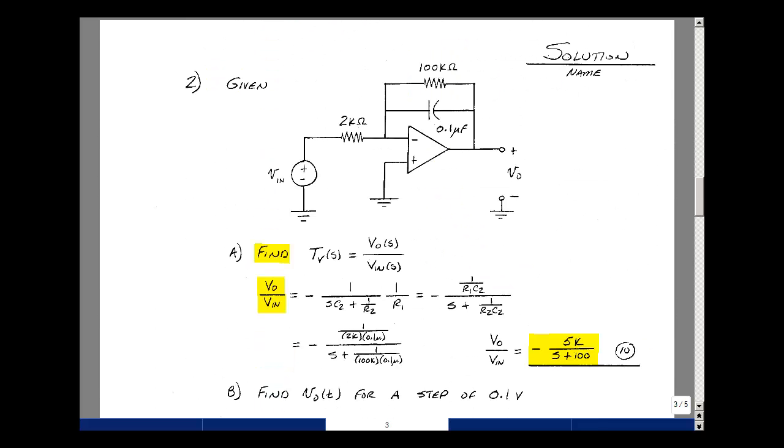In problem number two, we're asked to find the voltage transfer function in the S domain. If you recall for an op-amp circuit in an inverting amplifier configuration, the gain is equal to minus Z2 divided by Z1. Since they have two elements in parallel, let me add up their admittances and then take the reciprocal. I'll call this R1, R2, and C2. Let's do it symbolically. So C2 plus 1 over R2, that's this value, and then the reciprocal of that is our impedance Z2, and then 1 over Z1 would just be 1 over R1.